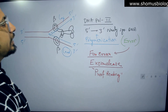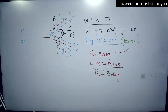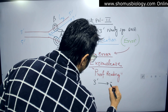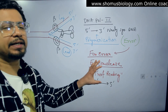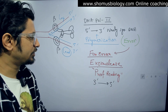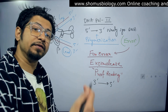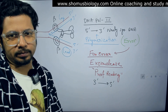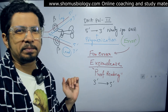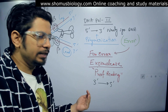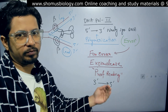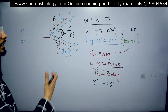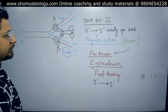The exonuclease or proofreading activity that DNA Polymerase 3 engages in operates in the 3 prime to 5 prime direction — the reverse of the polymerization direction which is 5 prime to 3 prime. So polymerization is 5 prime to 3 prime, and the nuclease or proofreading activity is 3 prime to 5 prime.